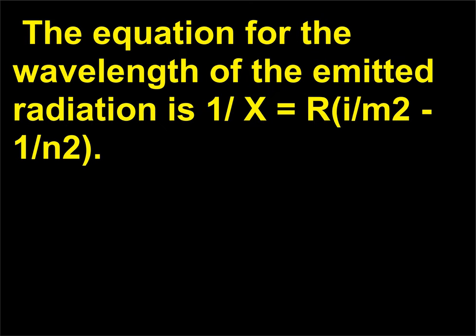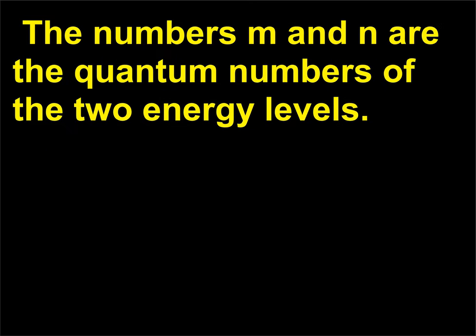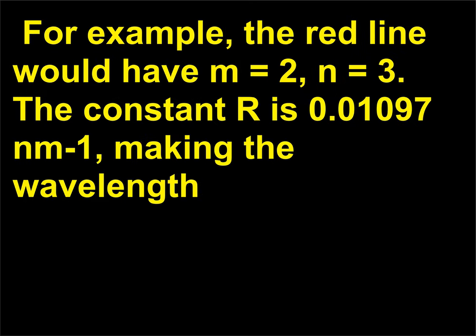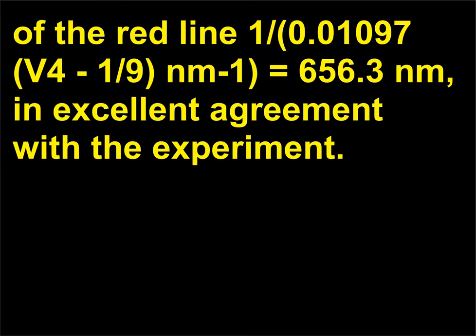The equation for the wavelength of the emitted radiation is 1/λ = R(1/m² - 1/n²). The numbers m and n are the quantum numbers of the two energy levels. For example, the red line would have m = 2, n = 3. The constant R is 0.01097 nm⁻¹, making the wavelength of the red line 1/(0.01097 × (1/4 - 1/9)) nm⁻¹ = 656.3 nanometers, in excellent agreement with experiment.